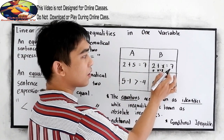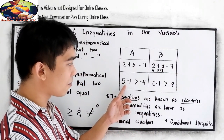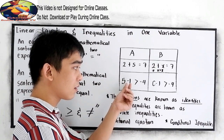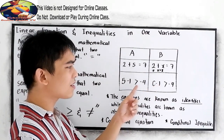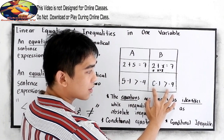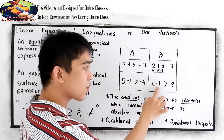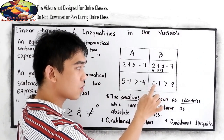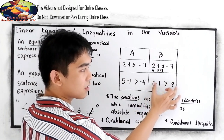In the second example, 5 minus 1 is greater than negative 4. If we simplify this, 5 minus 1 is 4, and we know that 4 is greater than negative 4 — this is true. We can also test values for c: if c equals 10, then 10 minus 1 is greater than negative 4, which is true. If c equals 8, then 8 minus 1 is 7, which is greater than negative 4. So there are many values for c that satisfy this inequality.